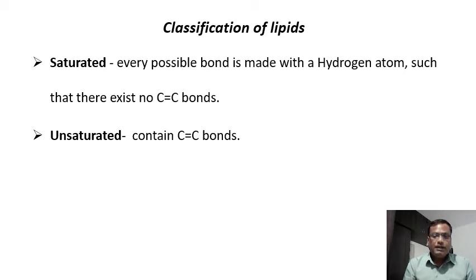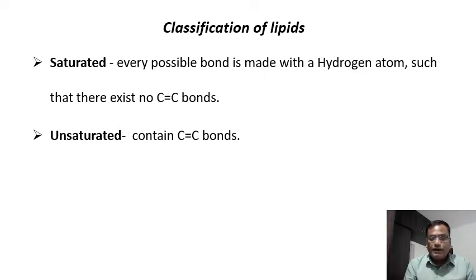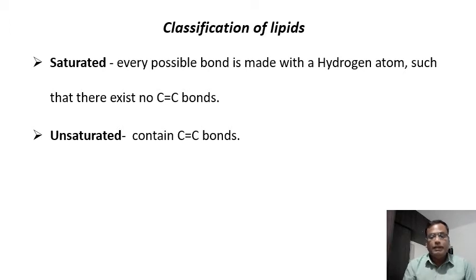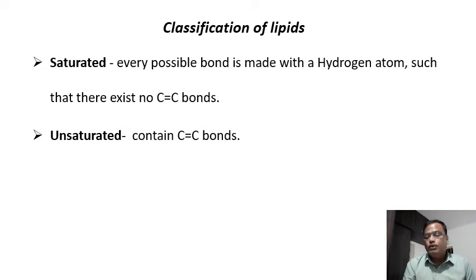Lipids are made up of fatty acids and glycerol. Just as carbohydrates are made up of monosaccharides and proteins are made up of amino acids, lipids are made up of their own monomers — fatty acids and glycerol. The fatty acids may be either saturated or unsaturated. Saturated means every possible bond is made with a hydrogen atom such that there are no double bonds in the fatty acid chain.